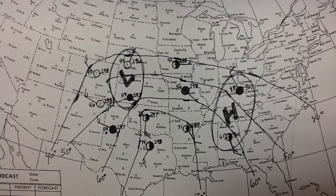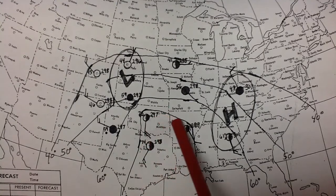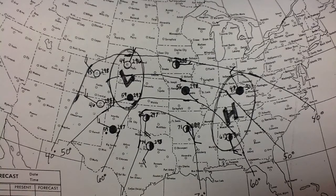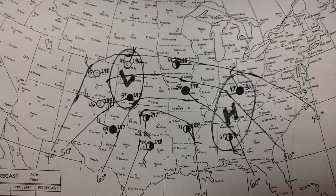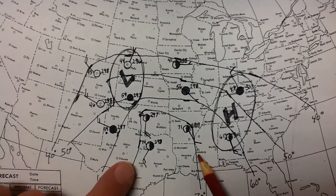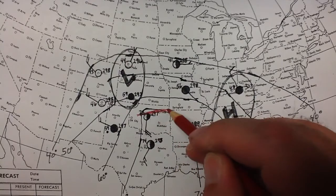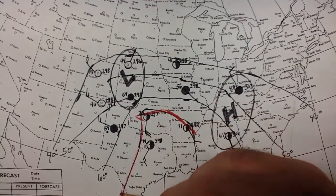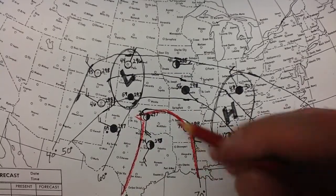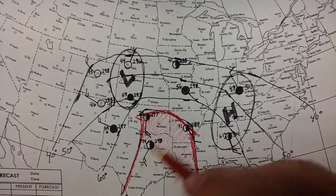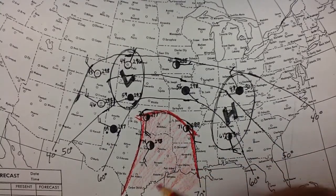Now it says to outline in red the area of the warm air mass. Our warm air mass has temperatures of 70, 70, 70, 74, 73, and 71 — pretty warm air compared to everything else. If you look, we have arrows showing what direction it's moving. So we're going to put a big arrow for our warm air mass and color-shade it in, and since it says put that in red, we just did.